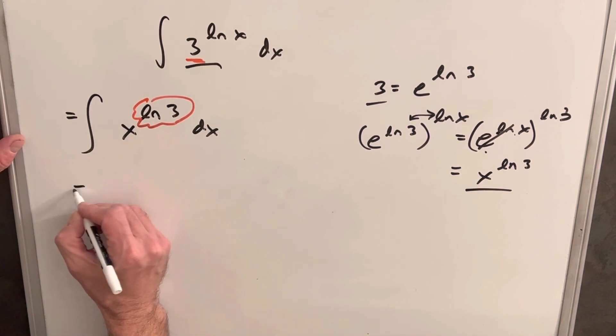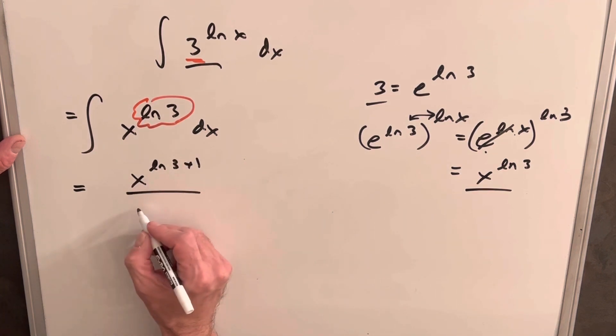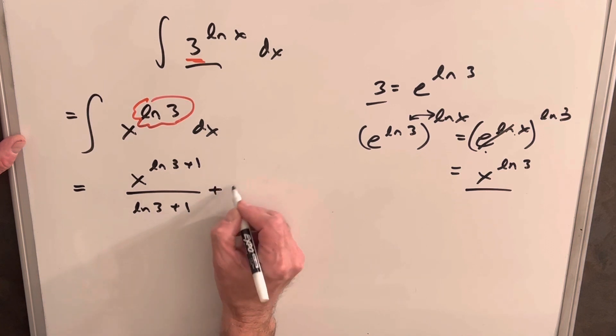So when we do that, we're going to add, just add 1 to this and then divide by that same amount. So we're going to have ln 3 plus 1 in the denominator plus C.